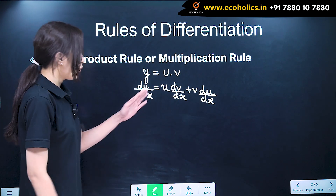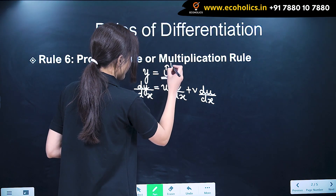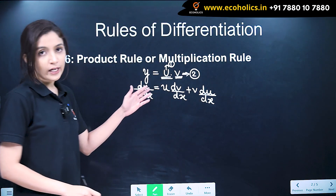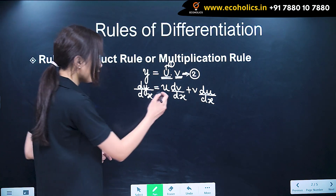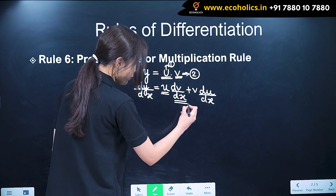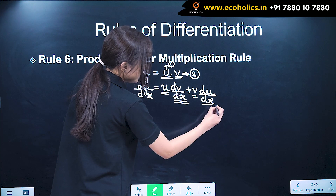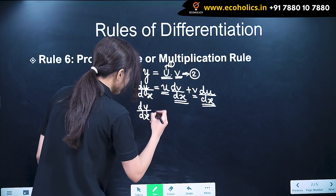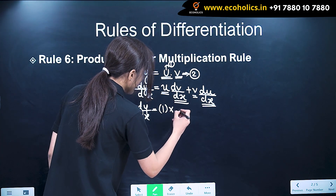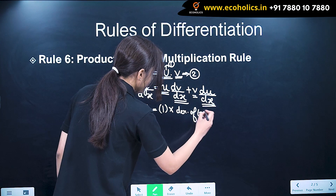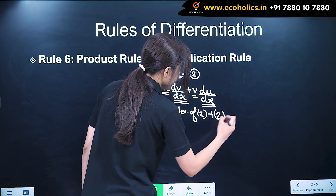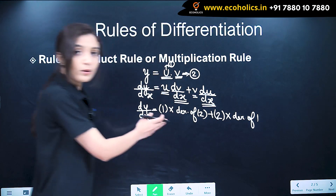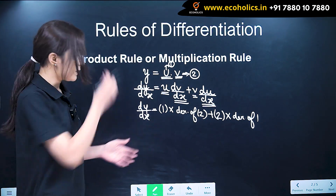An easy way to remember this: let us say this is our first function and this is our second function. The product rule states that first function into derivative of second function, plus second function into derivative of first function. Let us look at an example.